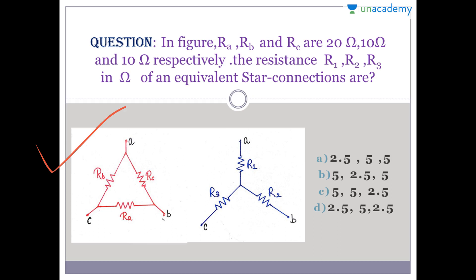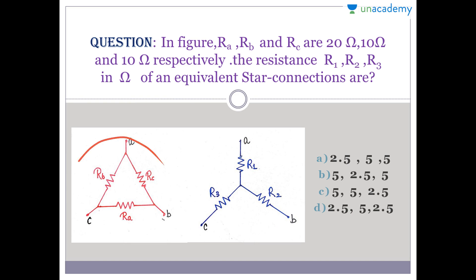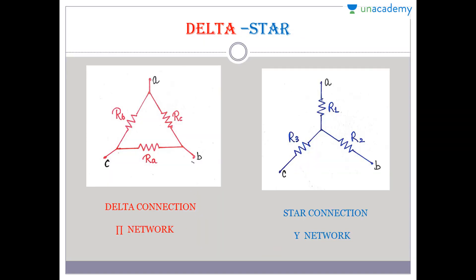Let's start. Here is a two-mark gate question. Although nowadays nobody will ask you directly to convert delta into star — it will be embedded in a complex network and then you need to convert it. So let's read the question: In the figure, R_ABC, R_A, R_B, and R_C are 20 ohm, 10 ohm, and 10 ohm respectively. Find the resistance R1, R2, and R3 in ohm of the equivalent star connection.